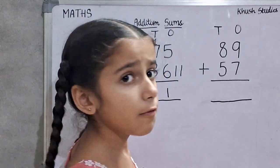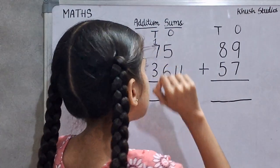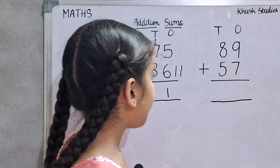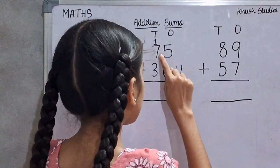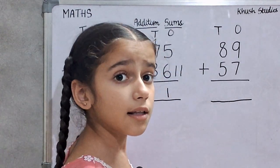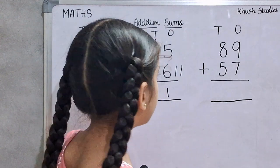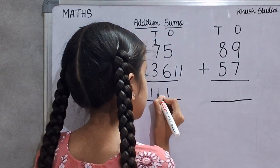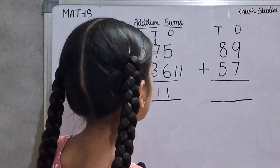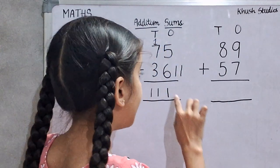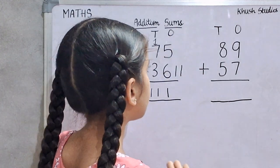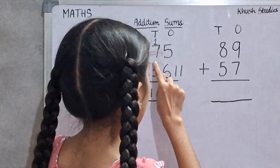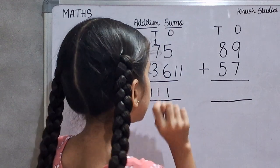We will add tens. 1 plus 7 is 8, and 8 plus 3 is 11. So, 11 tens and 1 ones. 75 plus 36 is 111.